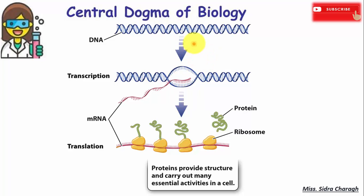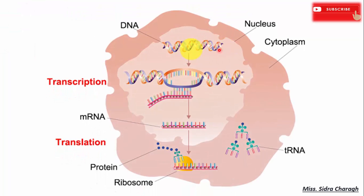Our DNA, or deoxyribonucleic acid, contains genes that determine who you are. How can this organic molecule control your characteristics? DNA contains instructions for all the proteins your body makes, and proteins in turn determine the structure and function of your cells.